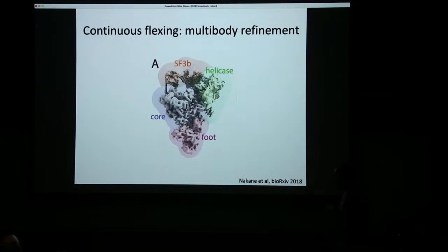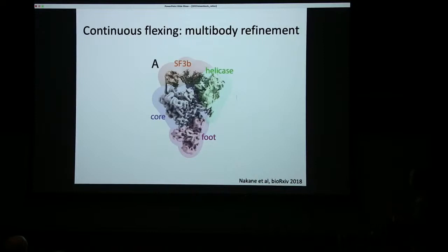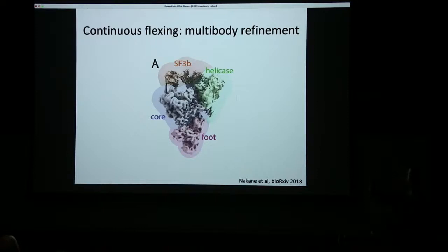Of course, many protein complexes are not described by this type of heterogeneity with a user-specified number of discrete classes. Many complexes have a much more flexible way of moving, where one domain flexes relative to another or multiple ones. To describe those, we introduced an algorithm called multi-body refinement. This is an example from a spliceosome particle: a reconstruction from a whole dataset of a few hundred thousand spliceosome particles gave this map, where the core region has pretty good details and the foot is okay too, but the helicase is getting rather rough, and most of the density for factor SF3B is absent or at very low thresholds. That is because SF3B and the helicase move independently from each other, often with respect to the core, and even the foot wobbles around a bit.